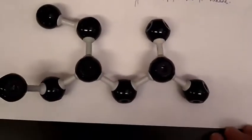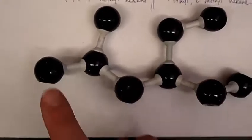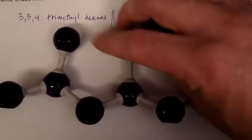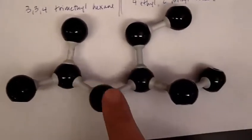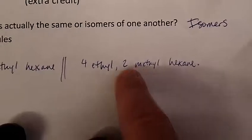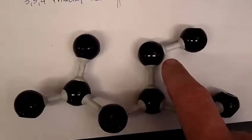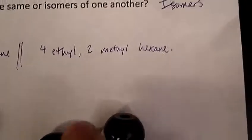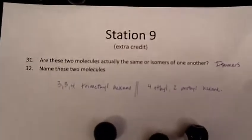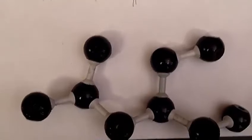The second molecule — the longest chain I can find is also a chain of six. There is a one-carbon branch and a two-carbon branch off the main chain of six. I have to name these alphabetically: ethyl first, then methyl. The ethyl branch is on the fourth carbon and the methyl branch is on the second carbon, so this is 4-ethyl-2-methylhexane. These two molecules are isomers of one another — not the same molecule — because they have the same number of carbons and the same number of hydrogens, just arranged and connected differently.